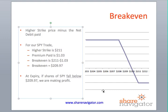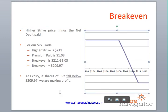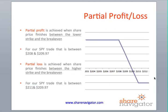Partial profit is achieved when the share price finishes between the lower strike ($208) and the break-even ($209.97). Partial loss occurs when the share price finishes between the higher strike ($211) and the break-even. For example, if shares are at $210 at expiry, we're in a small partial loss; at $209, a partial profit; below $208, full profit; above $211, we lose our full $103 investment.